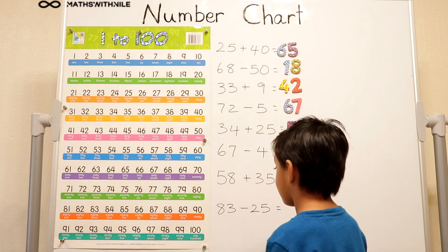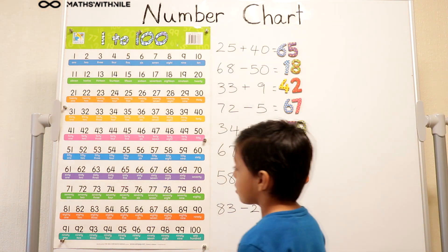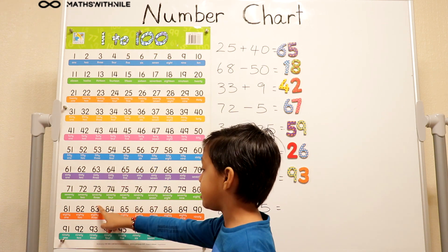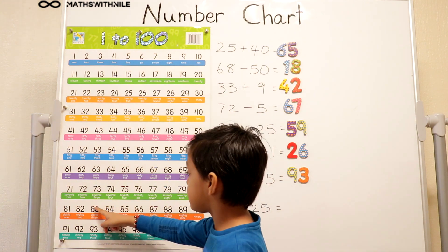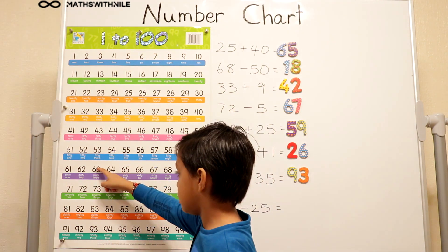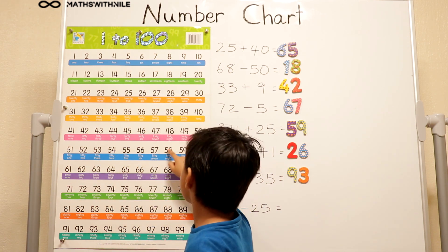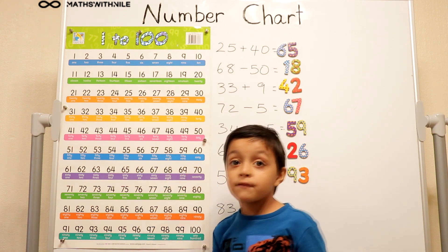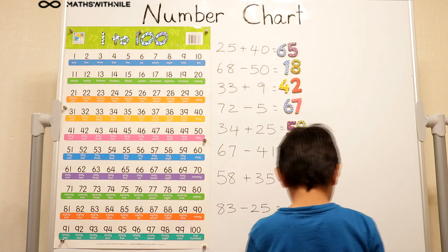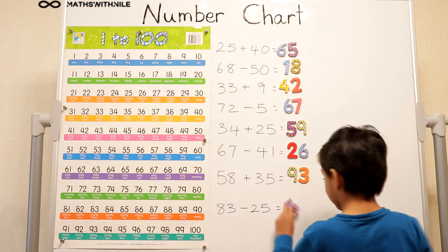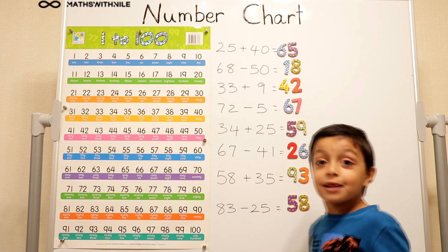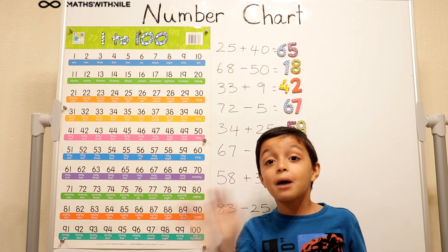83 take away? 83 take away 25. So we've got 83 take away 10, 20, 1, 2, 3, 4, 5. And it equals 58. So I'm going to get my 5 and 8. Okay. And that was the end of our lesson. Hope you enjoyed it. Bye.